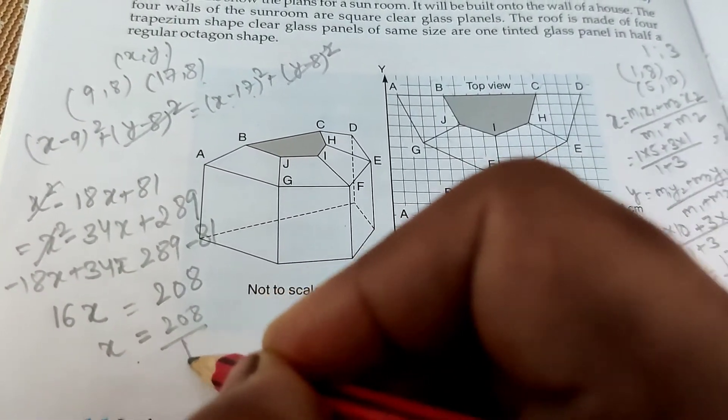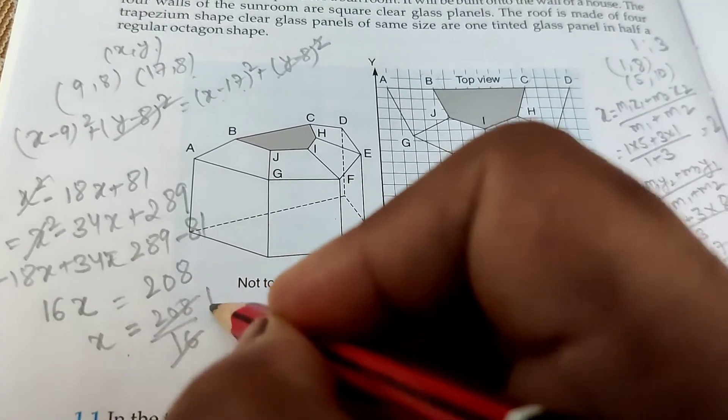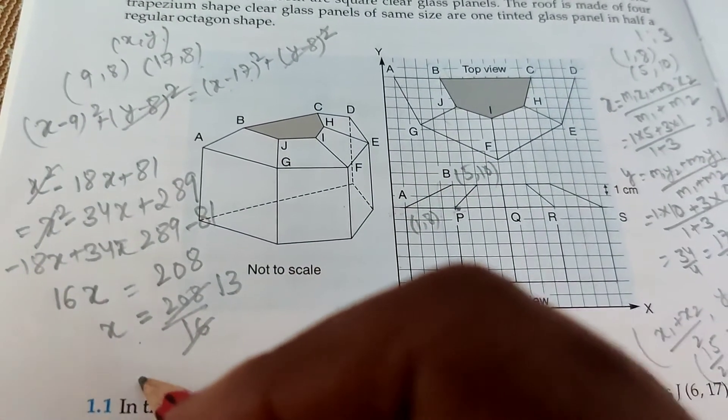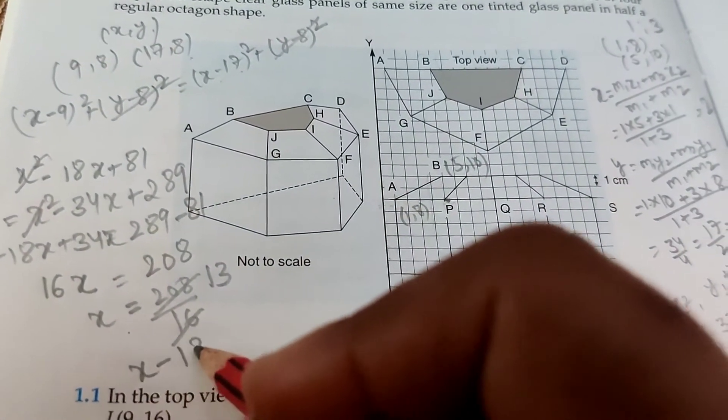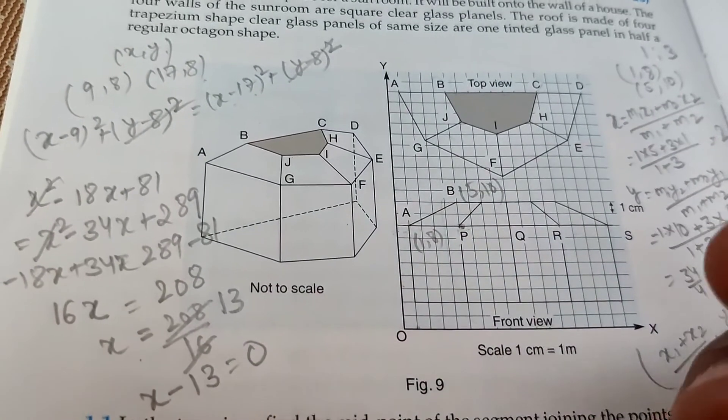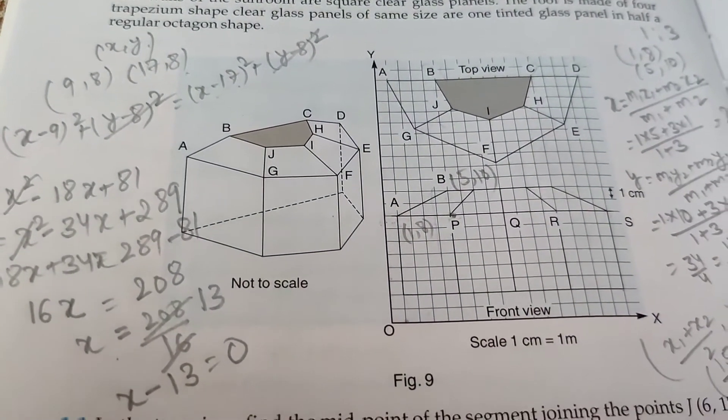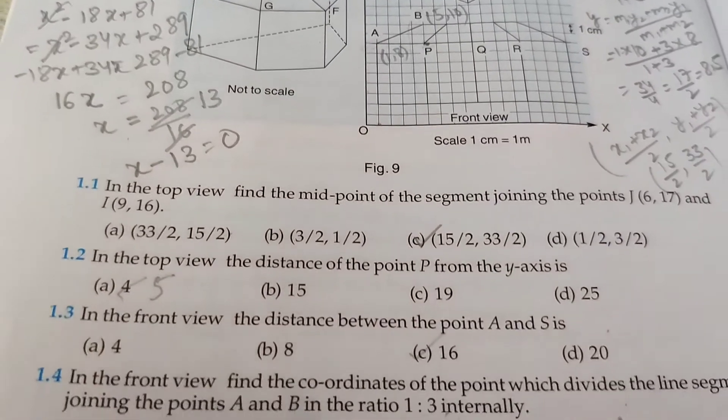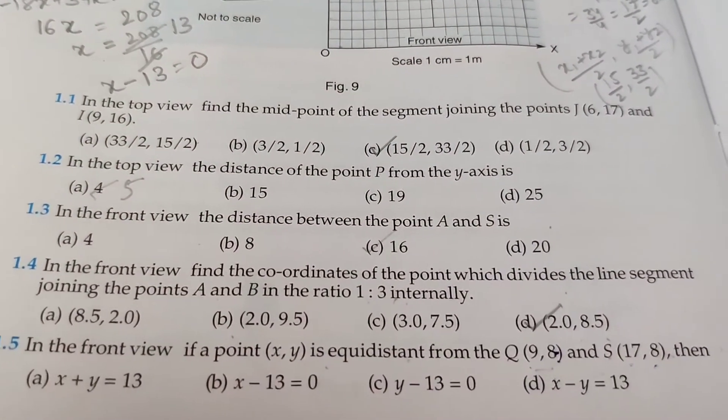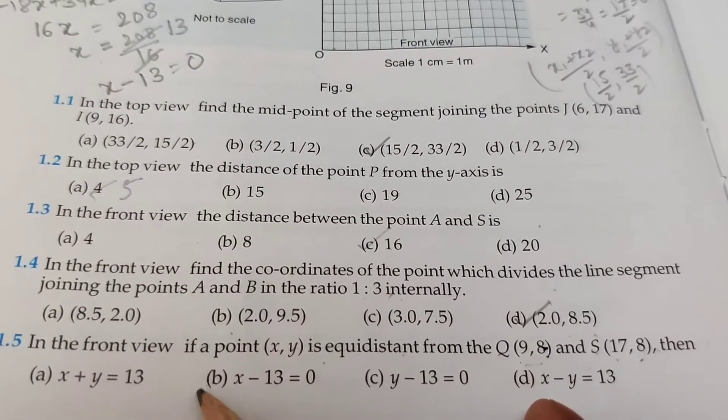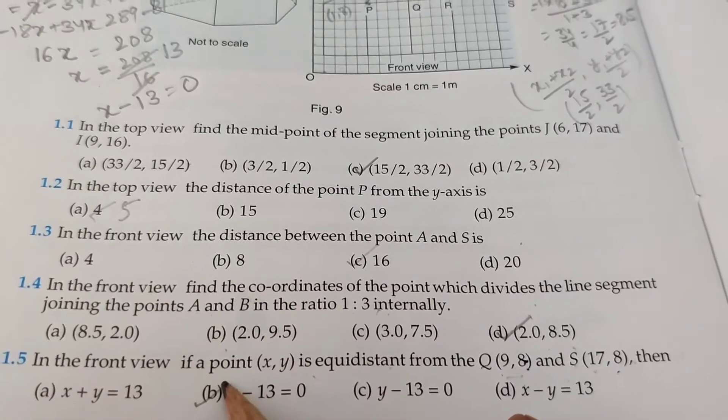16x equals 208, so x equals 13. The equation is x minus 13 equals 0. Understand clearly? x minus 13 equals 0. The option is the second option. This one is right.